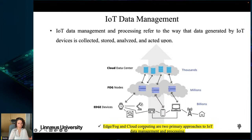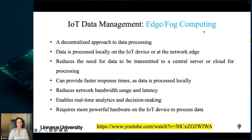In IoT we need all of them. We have devices, we can do edge computing there, fog computing in the middle, and cloud computing at the top. It depends on whether our IoT application requires real-time computing or not. Edge and fog computing do have differences, so let's talk about edge computing specifically.